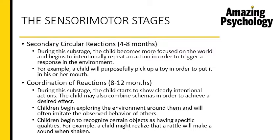The next sub-stage is coordination of reactions, between the eighth and twelfth month. Here, the child shows more clearly intentional actions and starts combining several schema to achieve a particular effect. They also explore their environment more and start imitating people around them. For example, the child begins to understand that objects have specific qualities — like if a car is pulled backward and released it moves forward, or if a rattle is picked up and shaken it makes a sound. The child starts associating different qualities to different objects.